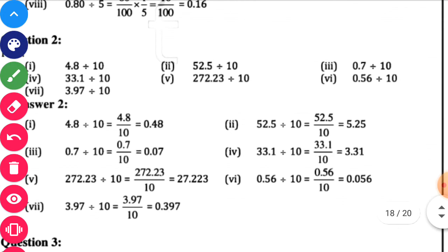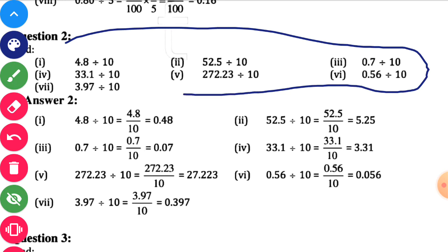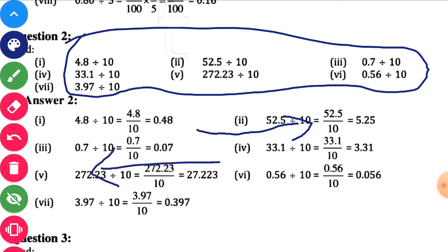Find, first one: 4.8 divided by 10. So here division is there and you have to divide the decimal numbers by 10. You can see all the examples — all the decimal numbers you have to divide by 10. So when multiplication is there, you shift the decimal point towards the right side. But when division is there, you shift the decimal point towards the left side.